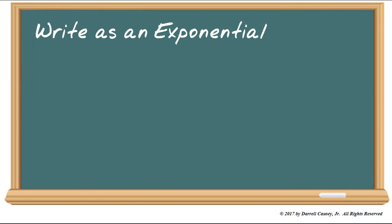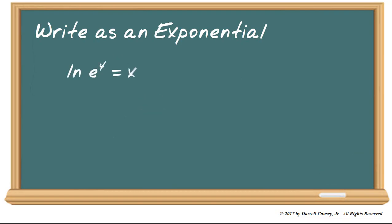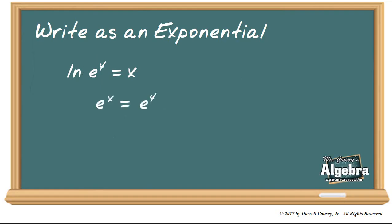Now write as an exponential. Log base 5 of 25 equals 2. Well, there's our base, so we're going to write 5. There's our exponent, so it's 5 squared, equals — and of course we know that's 25. Natural log of E to the 4th power equals x. Natural log is going to be base E, so E is our base. There's our exponent — E to the 4th. Very useful skill.